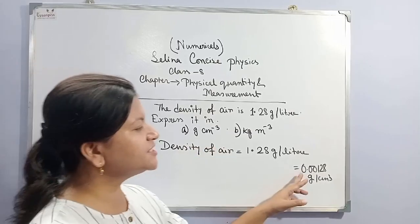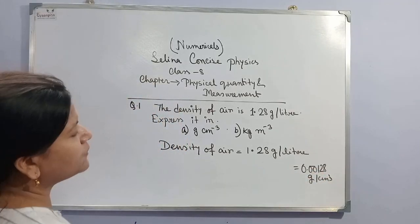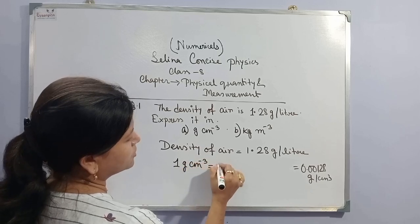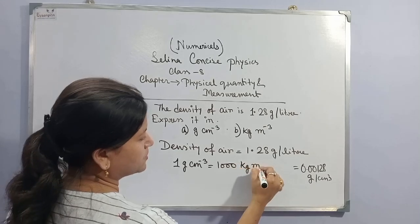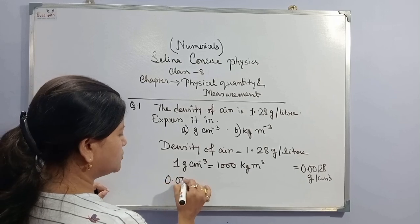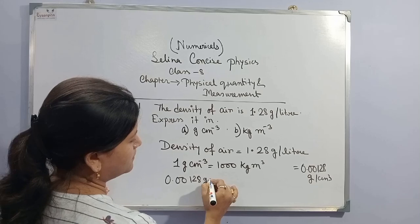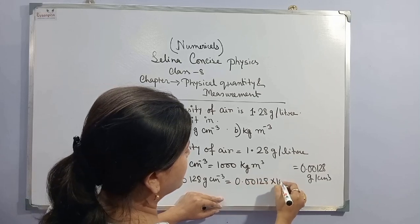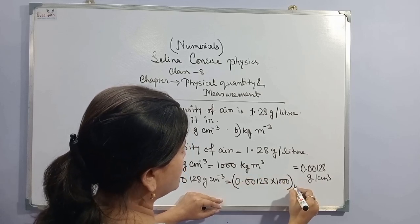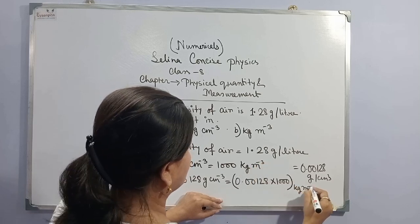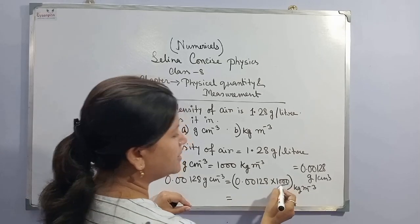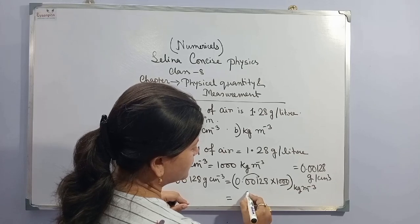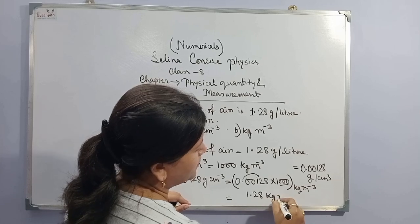Density of air is 0.00128 gram per cubic centimetre. Now we have to convert it into kg per cubic metre. We know that 1 gram per cubic centimetre equals to 1000 kg per cubic metre. So 0.00128 gram per cubic centimetre equals to 0.00128 multiplied by 1000, and the unit will be kg per cubic metre. There are 3 zeros, so the decimal shifts 3 digits. The answer is 1.28 kg per cubic metre.